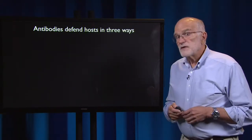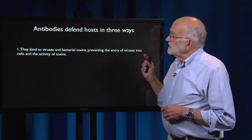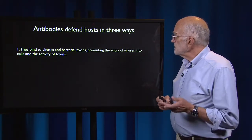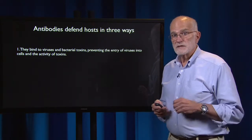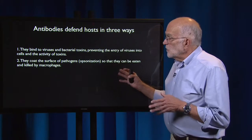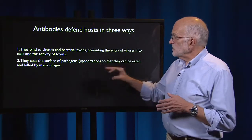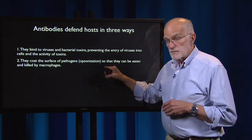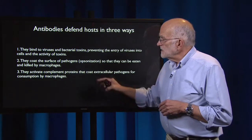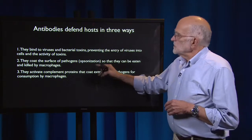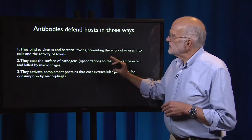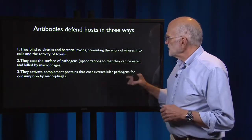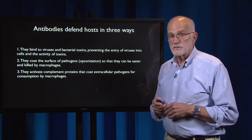Antibodies defend their hosts in three ways. First, they bind directly to viruses and bacterial toxins, preventing the entry of viruses into cells and damping the activity of toxins. Second, they coat the surface of pathogens — that's called opsonization — so that they can be eaten and killed by macrophages; this is also done by complement. Third, they activate complement proteins, triggering this activation so that complement complements the activity of the antibodies in coating extracellular pathogens for consumption by macrophages.